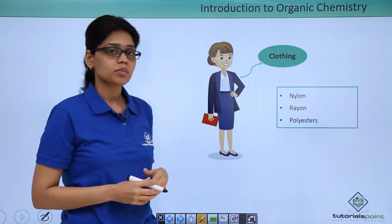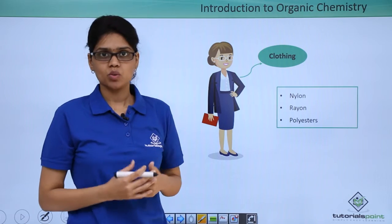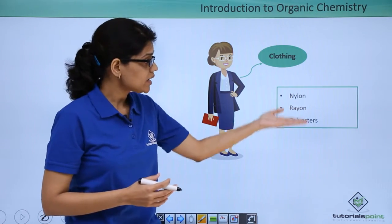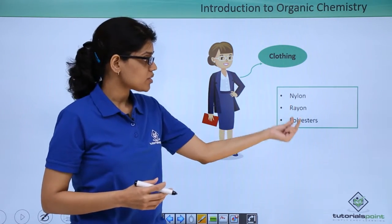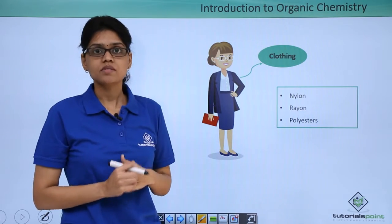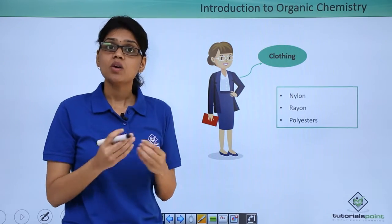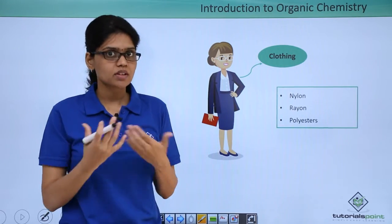Thirdly, if you look at this woman again, we can see that she is wearing a particular type of clothing. We have a varied range of clothing available to us like nylon, rayon, and polyesters. They are available to us mainly because of synthetic organic chemistry. Here we can appreciate how actually organic compounds are all around us.